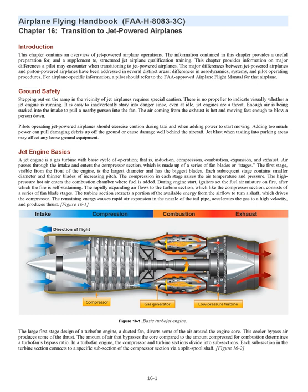The high-pressure hot air enters the combustion chamber where fuel is added. During engine start, igniters set the fuel-air mixture on fire, after which the fire is self-sustaining. The rapidly expanding air flows to the turbine section, which, like the compressor section, consists of a series of fan blade stages. The turbine section extracts a portion of the available energy to turn a shaft which drives the compressor. The remaining energy causes rapid air expansion in the tailpipe nozzle, accelerates the gas to high velocity, and produces thrust.